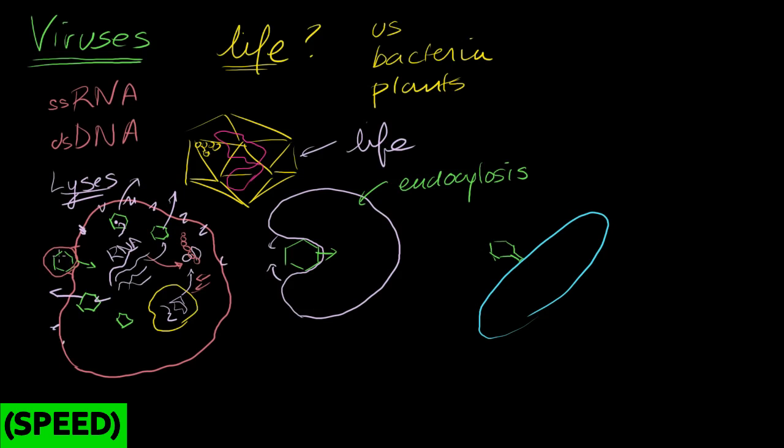Now I talked about before that some of these guys have their own membranes. So how did they get these bilipid membranes? Well, some of them, what they do is, once they replicate inside of a cell, they exit maybe not even killing the cell, they don't have to lyse. Some of them just bud.